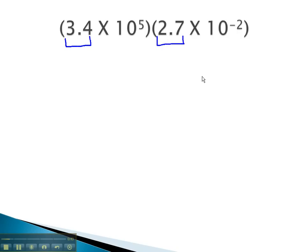3.4 times 2.7 on a calculator gives us 9.18. As we do the tens, we will use our exponent properties with multiplication. This means we need to add those exponents, giving us times 10 to the 5 and negative 2, third power.